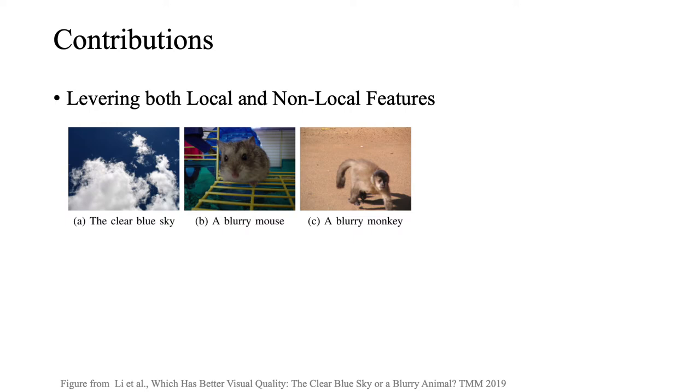In this work, we claim that IQA methods should use both local and non-local features to be effective in predicting quality scores. For example, in this figure, Lee et al. showed that although image A has a better subjective quality score than images B and C, most IQA methods can mistake and choose images B and C over image A.